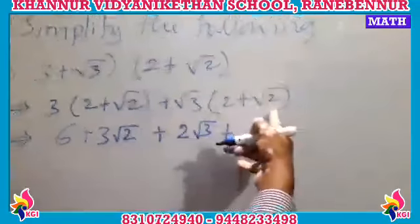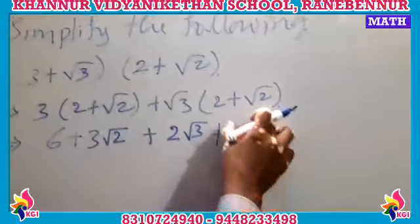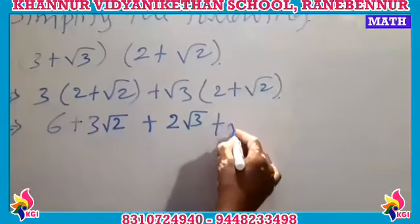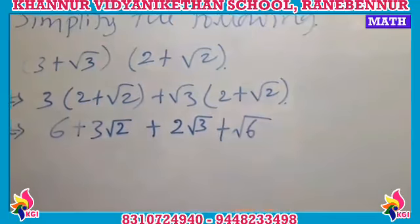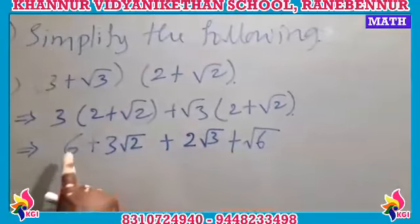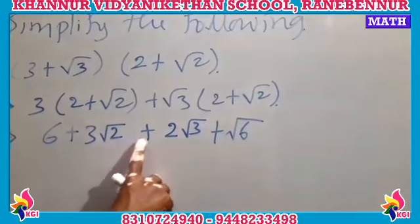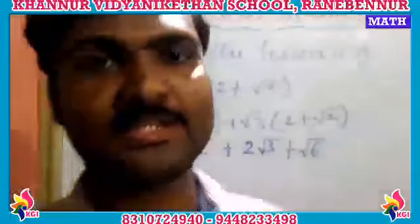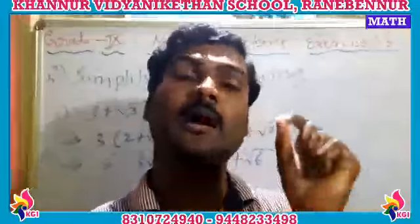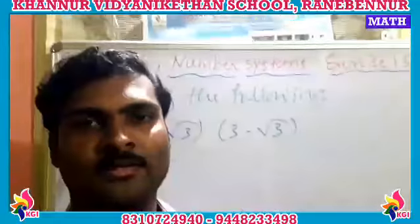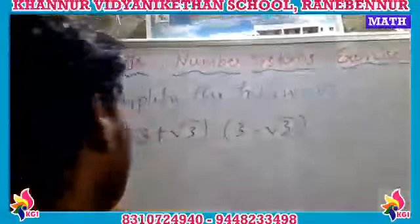Both terms are inside the square root, so √3 × √2 = √6. Combining all terms, the final value is 6 + 3√2 + 2√3 + √6. Whatever is inside the square root stays inside; outside terms are multiplied as regular terms.